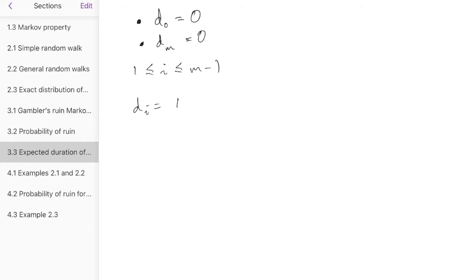So, di equals, well, again, Alice might win first round, in which case we've got the expected duration given she wins the first round.